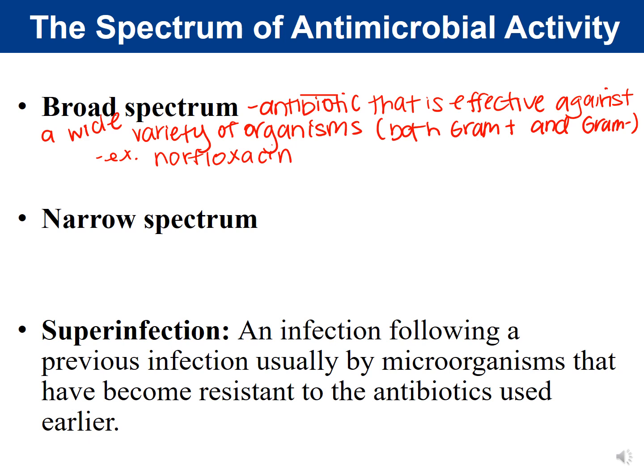A superinfection is an infection following a previous infection, usually by a microorganism that has become resistant to the antibiotics used earlier — essentially a secondary infection. By improper or overuse of antimicrobial drugs, many things have led to an increase in antibiotic-resistant bacteria. We will talk about these on a later slide.